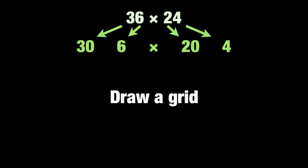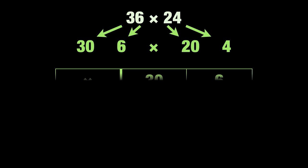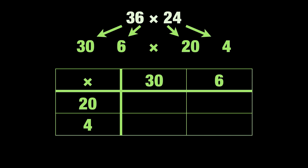Next we need to draw a grid to place the numbers in. It's very simple. Now we can start multiplying. First we do 30 times 20. Be careful with your answer — you need to get 600, not 60. Remember that 2 times 3 equals 6, so 20 times 3 equals 60, and 20 times 30 must be 600. Let's fill in the rest of the boxes.